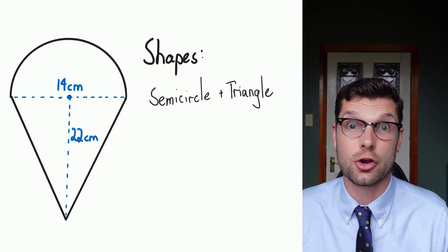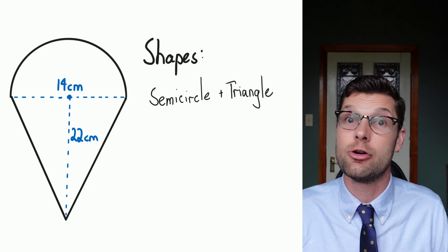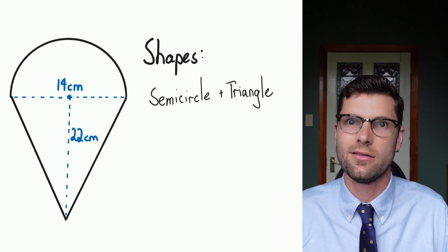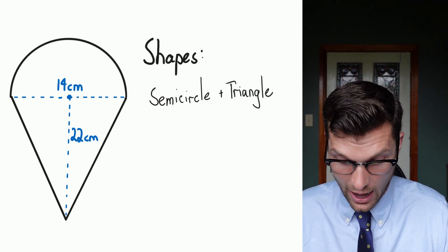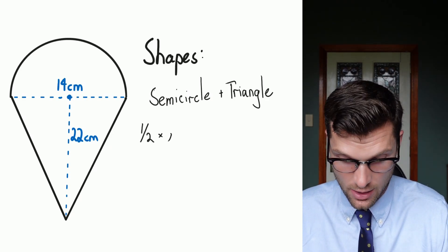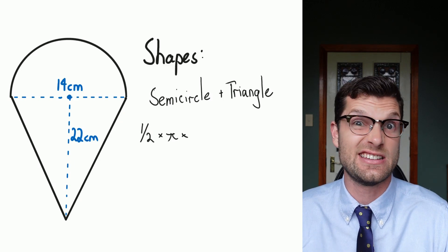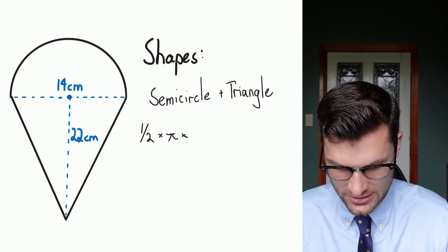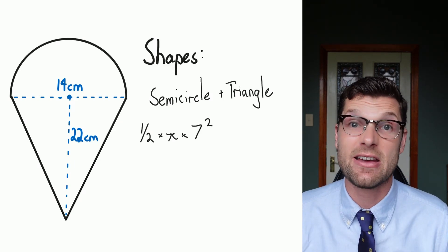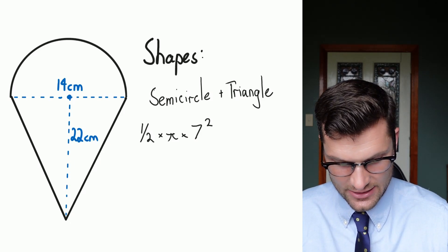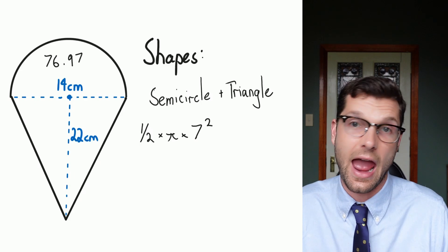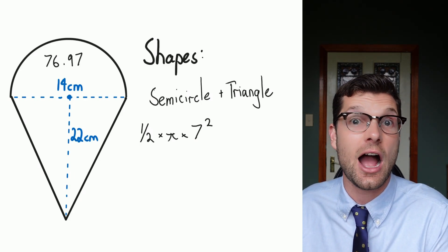So I'm going to do the semicircle first. So I know that the area of a circle is pi r squared and in this one I've got half of it. So all I've got to do is write a half multiplied by pi multiplied by the radius which is 7, not 14, 7 squared and that's my semicircle done. I'm going to throw that into my calculator and I get the answer 76.97 and once that's in there I know that I can't go wrong later.